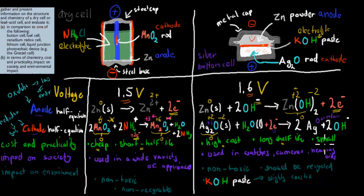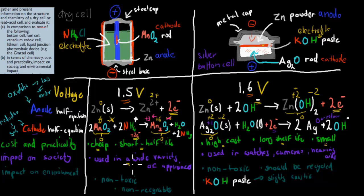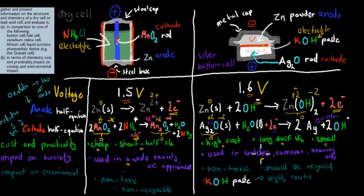One advantage of the silver button cell is that it's quite small, so it can fit into small devices. In terms of impact on society, dry cells are used in a wide variety of appliances — the majority of electrical appliances use AA or AAA batteries, so without them we'd have far fewer portable devices. Silver button cells are used in watches, cameras, and hearing aids — still used quite a bit, but because they're expensive they're not produced as much. They're essential for small devices where AA or AAA batteries won't fit.